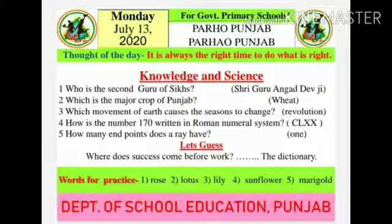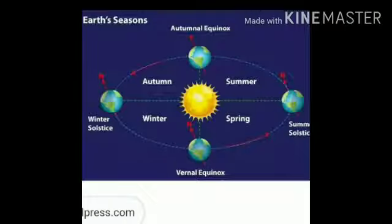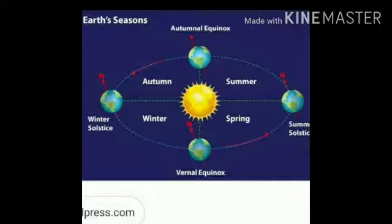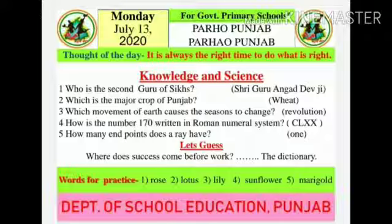Which movement of the earth causes the seasons to change? The answer is revolution. Dear students, we have learnt in the previous slides that the earth's movement around the sun is called revolution, and it is responsible for the four seasons: autumn, summer, winter, and spring. The earth takes 365 and 1/4 days to complete one revolution around the sun.